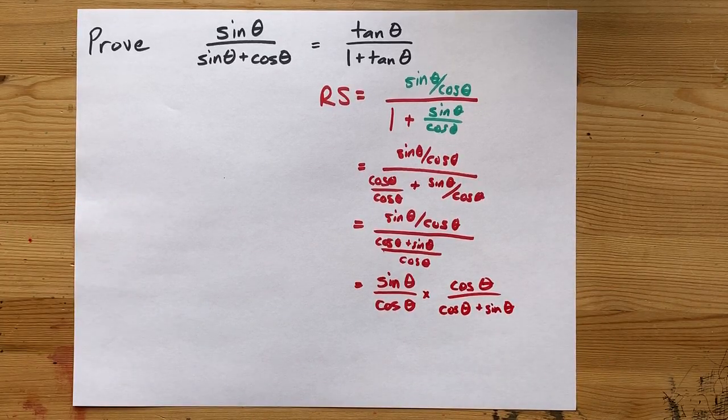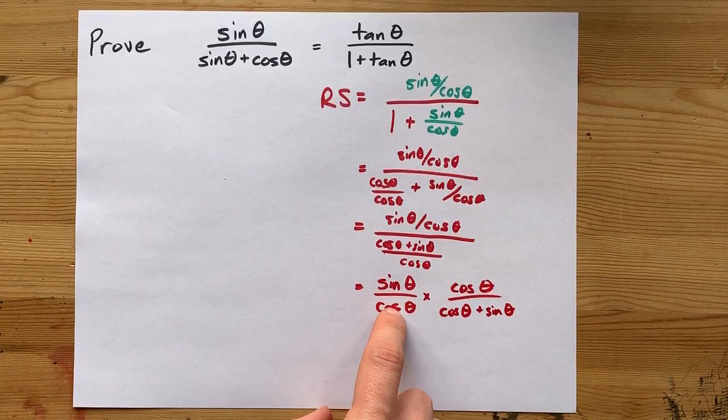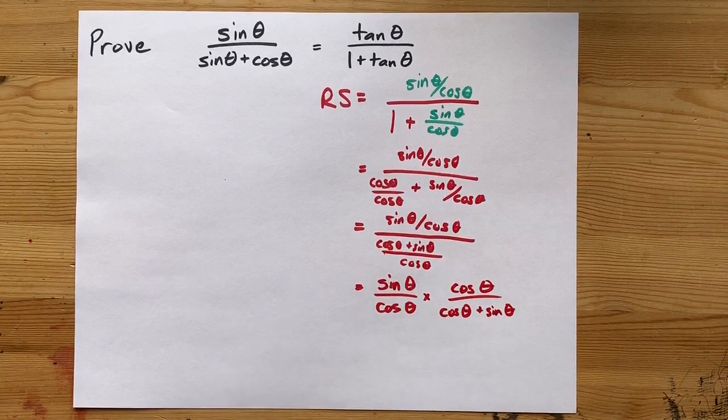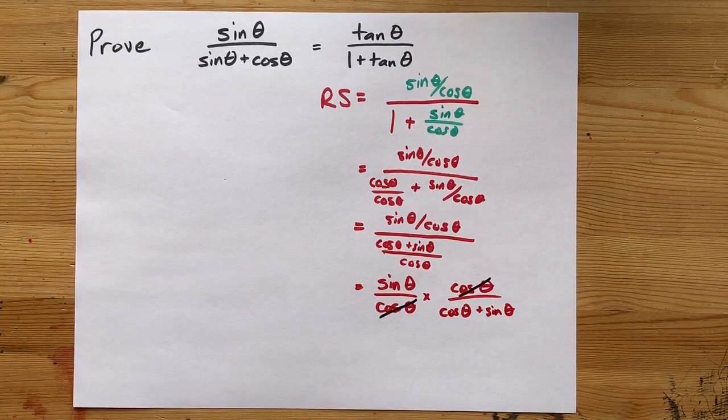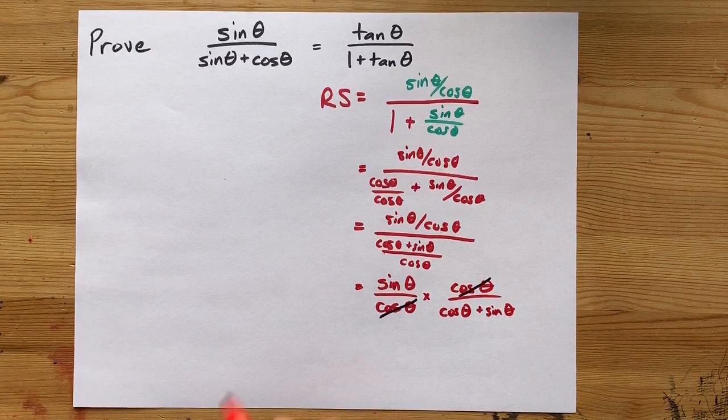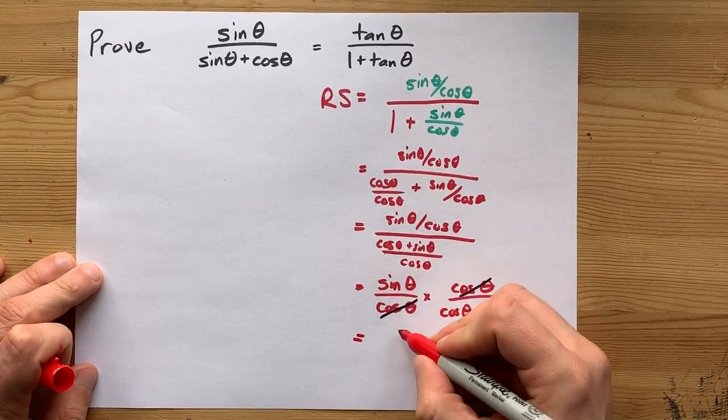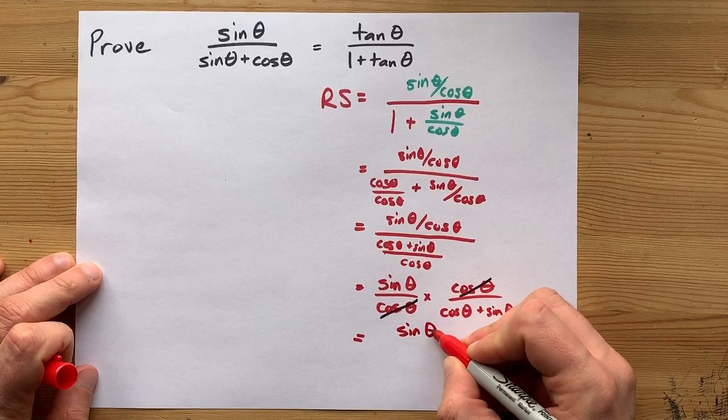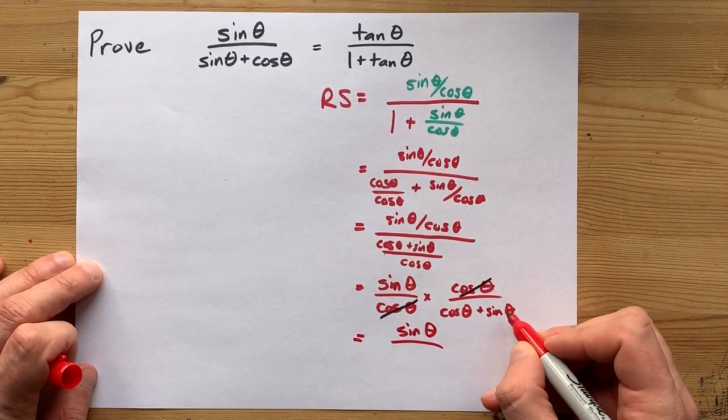Now, it's probably more obvious that the over cos times cos here will cancel with each other and leave us with sin theta on top. And on bottom, we have cos plus sin.